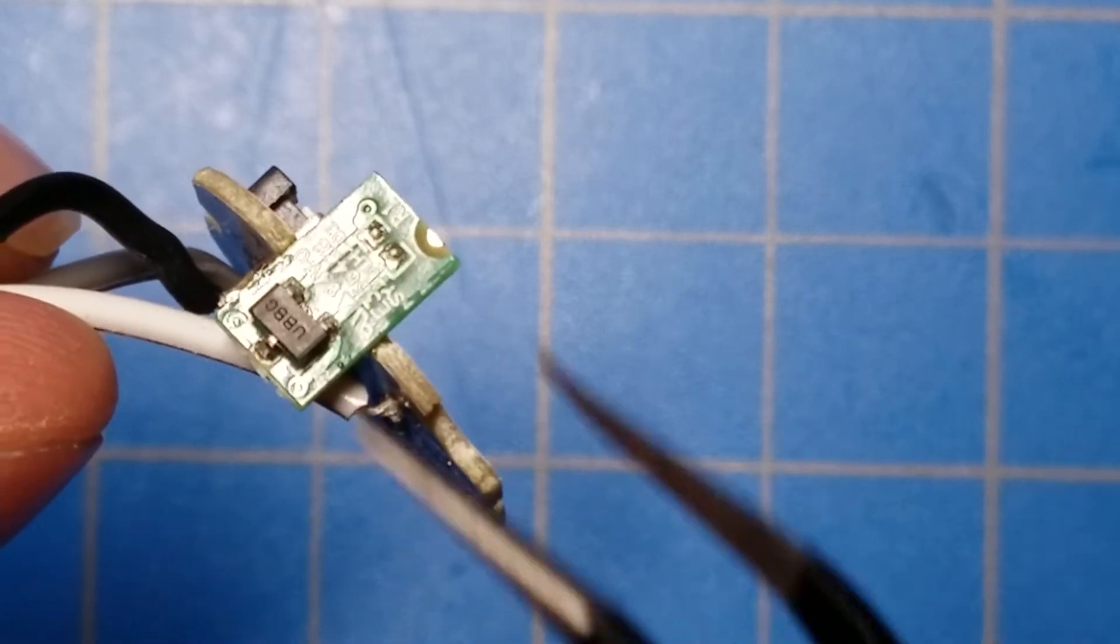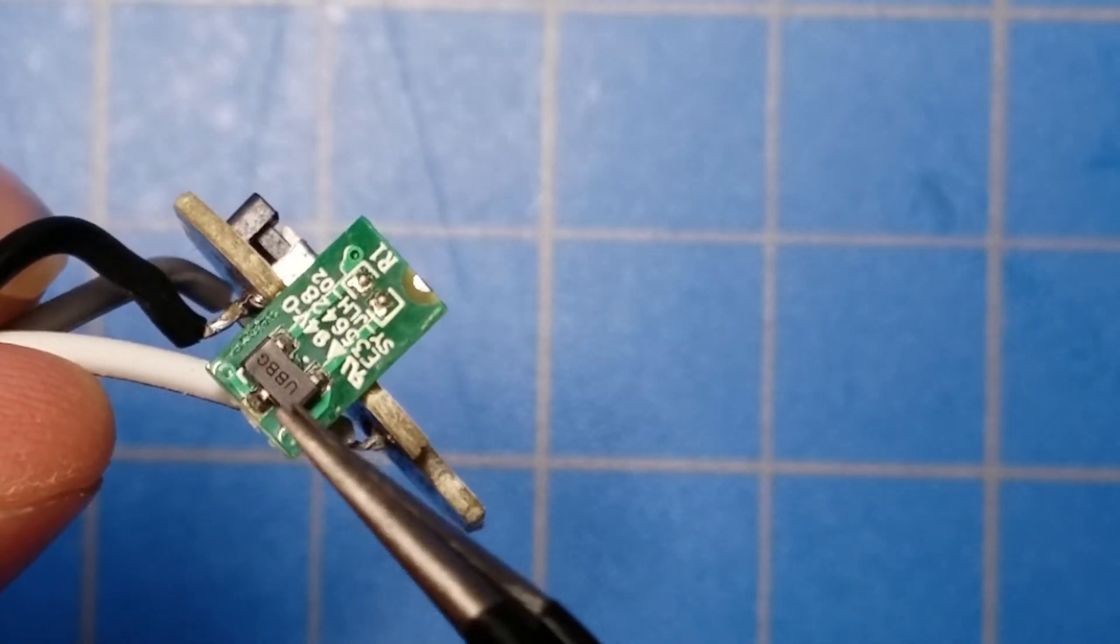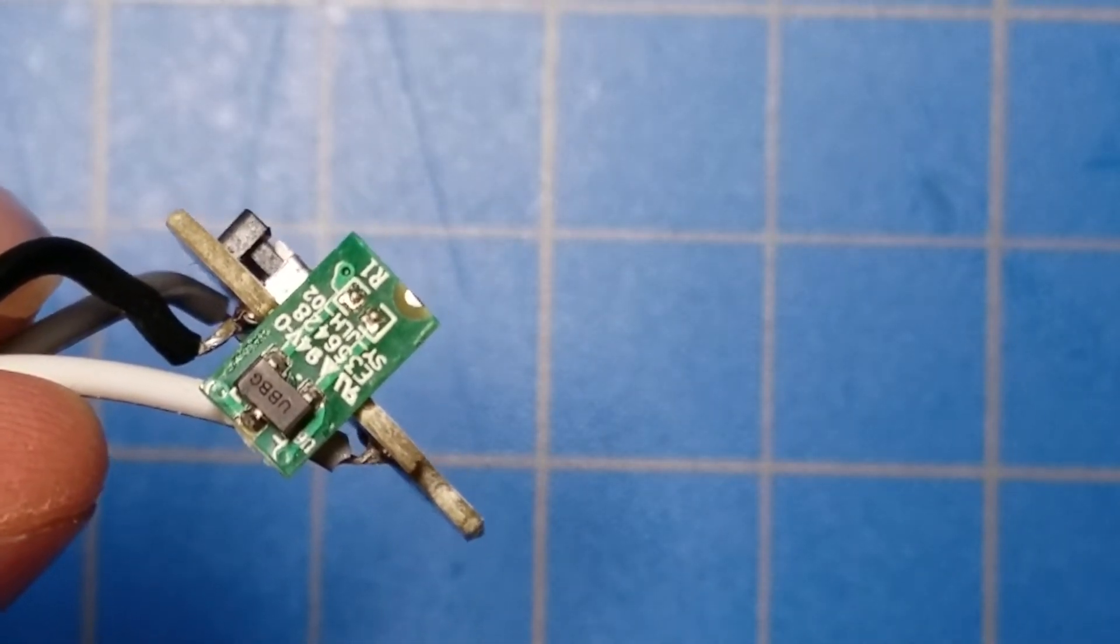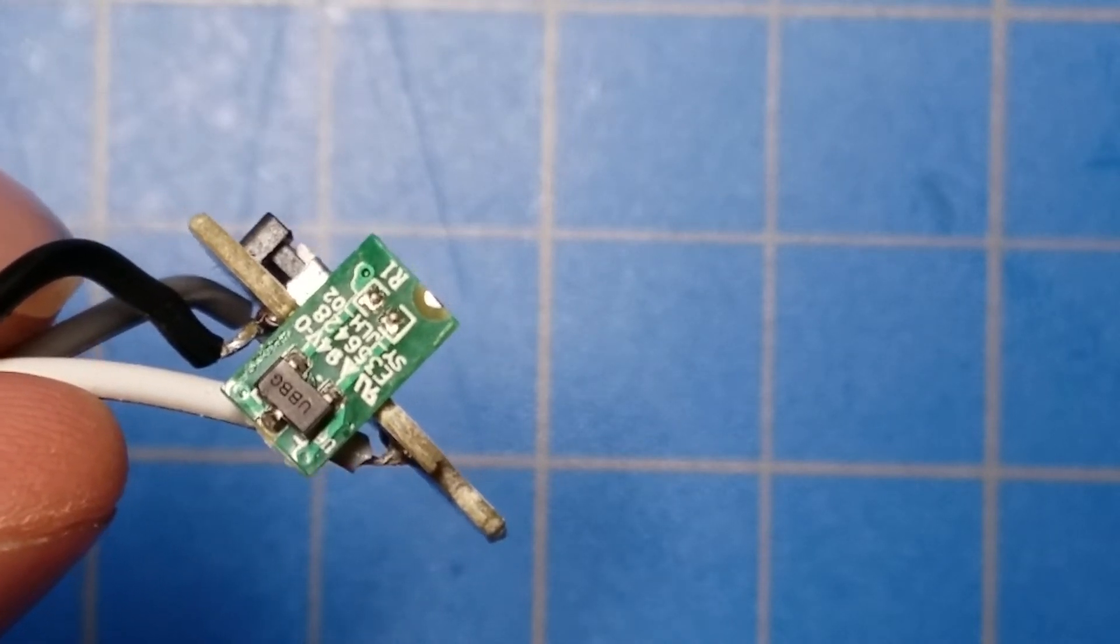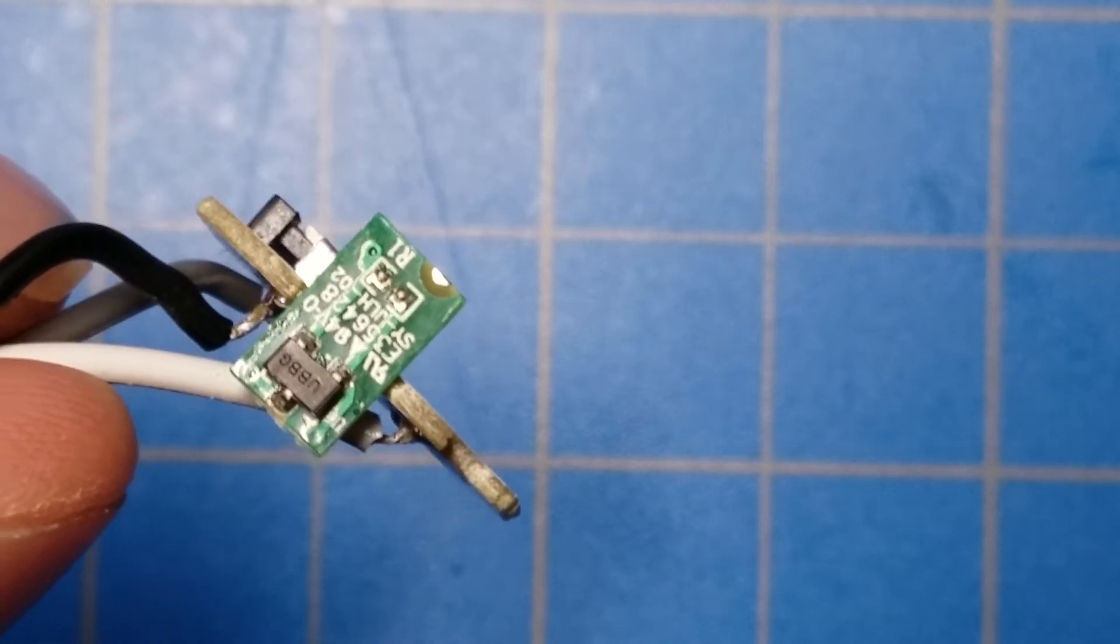effect sensor so that it can detect it. That then sends a signal down to the microcontroller through that ribbon cable and the microcontroller will turn on or try to turn on your lightsaber.